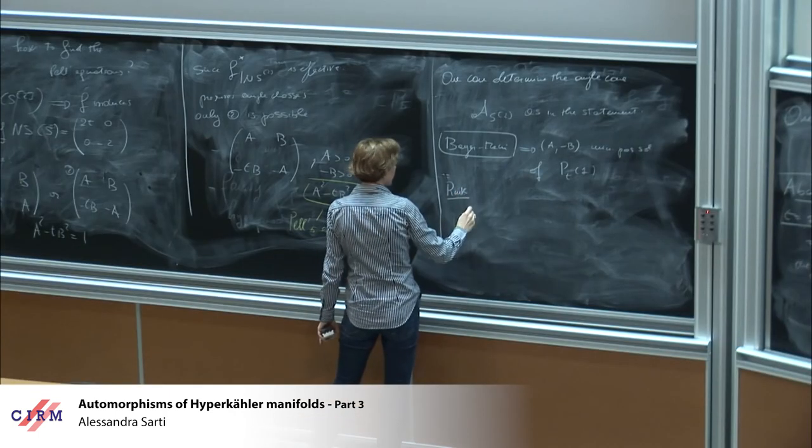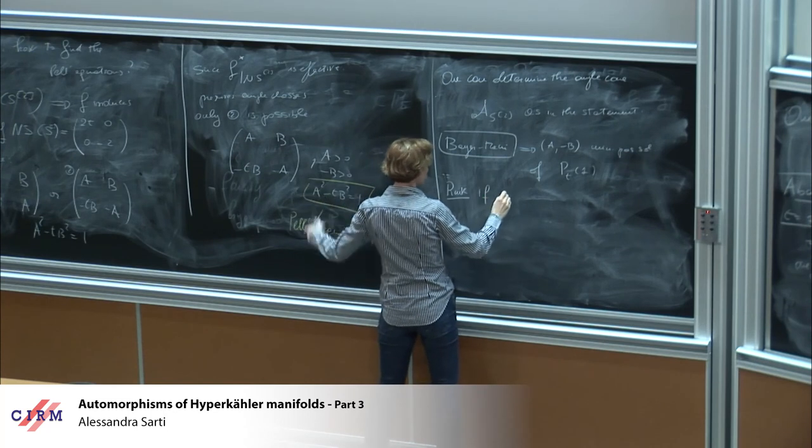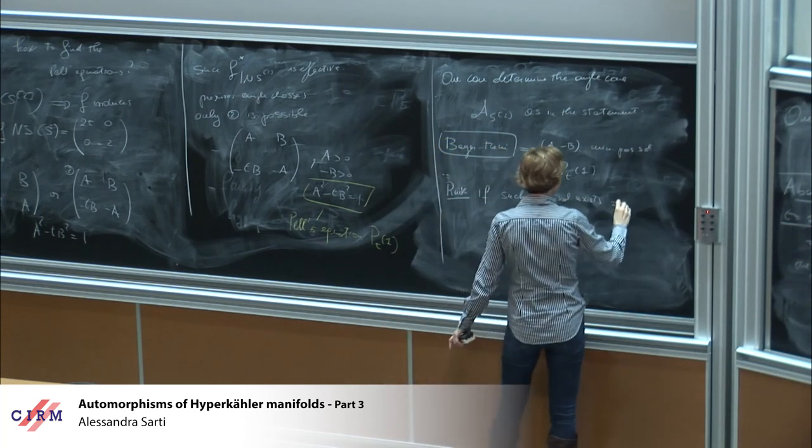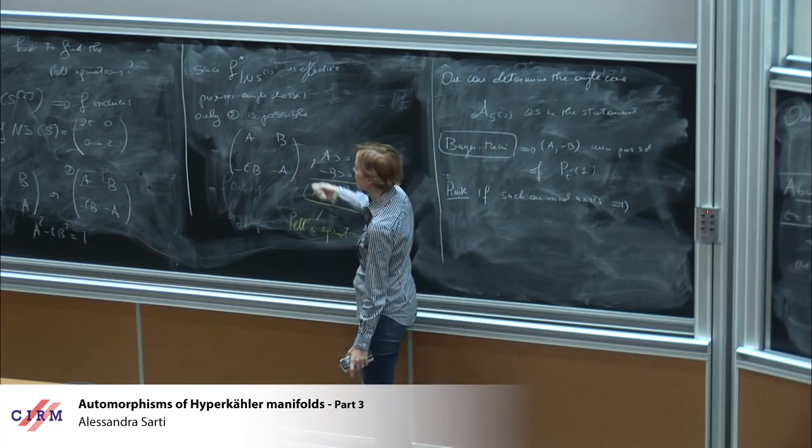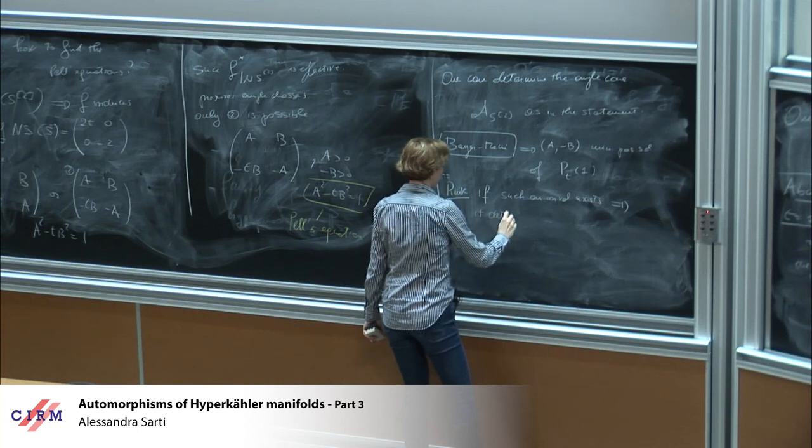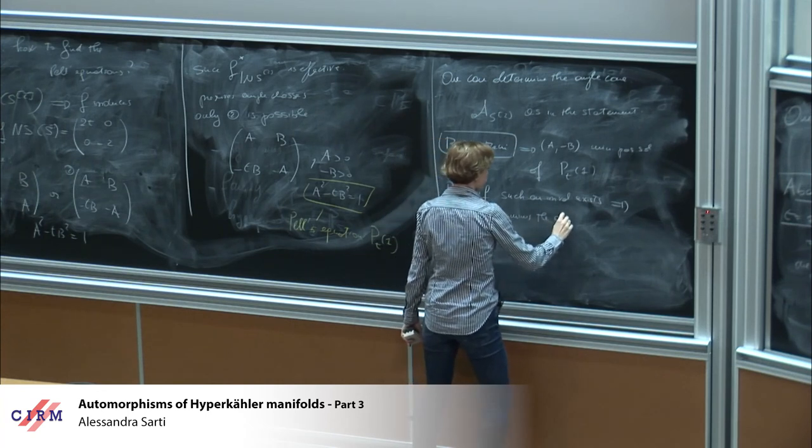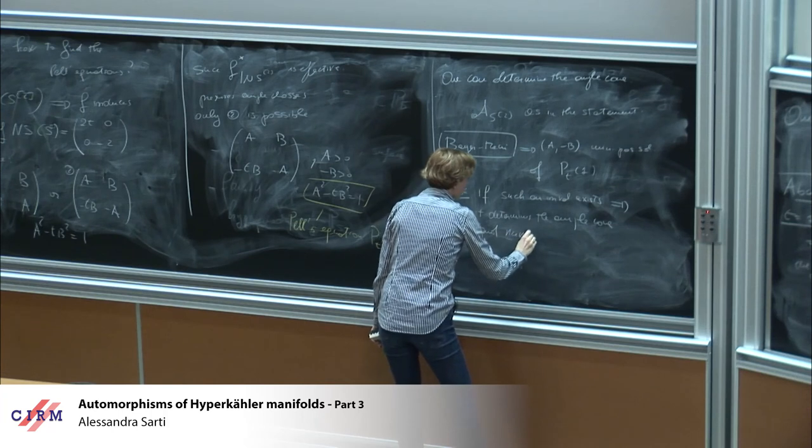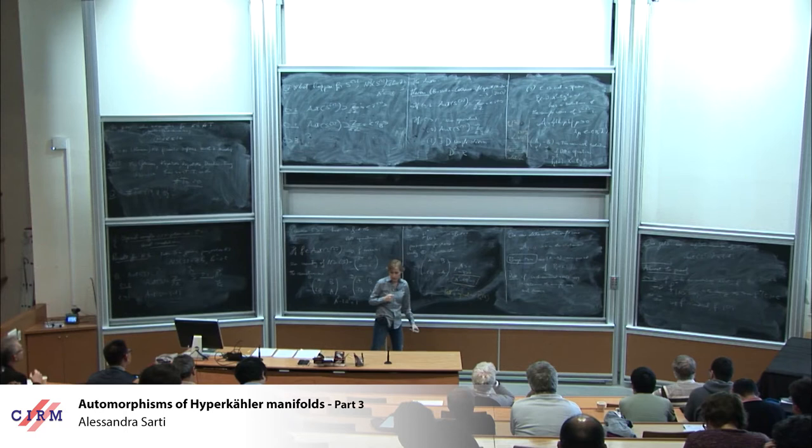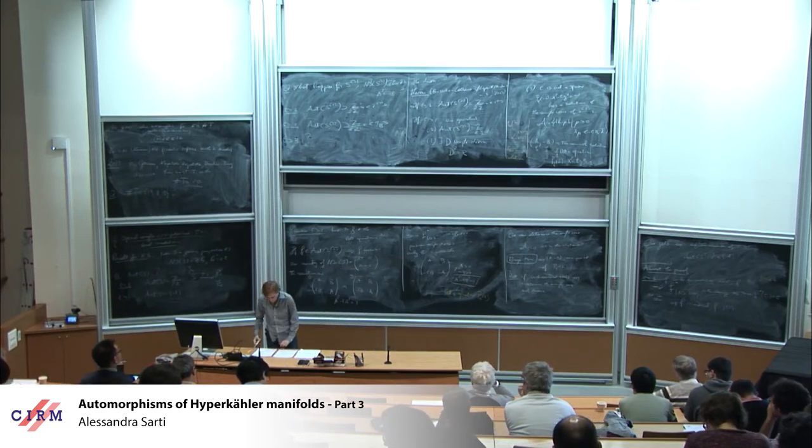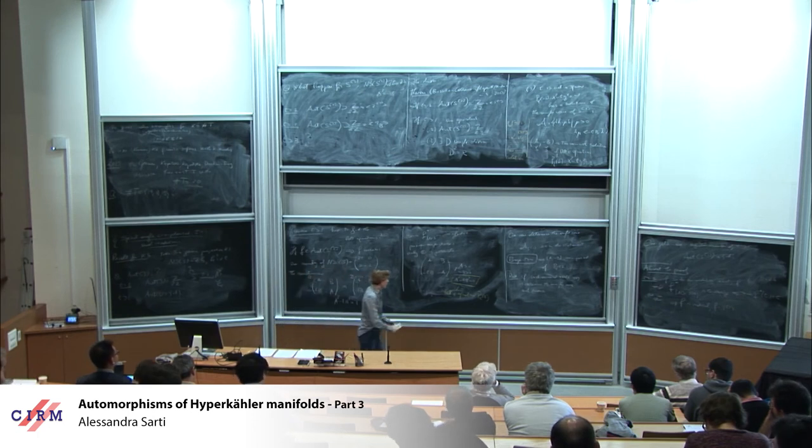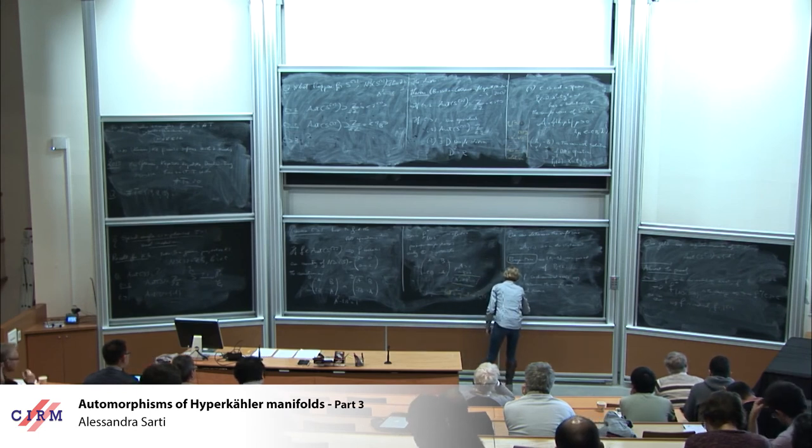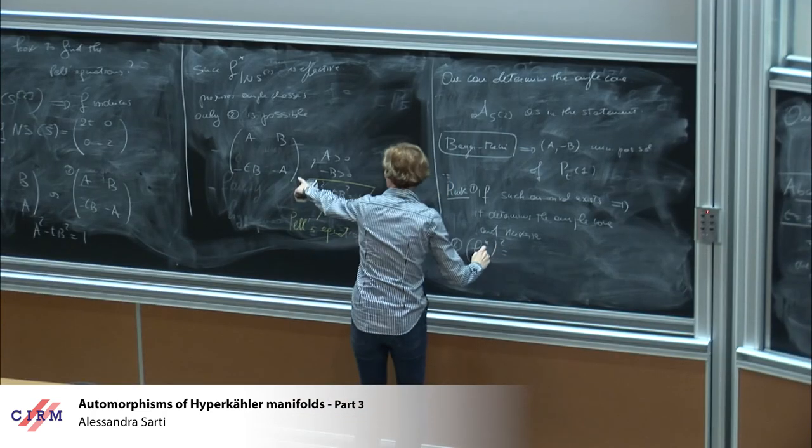And S2 that I write by using the bilinear form which is 2t, 0, 0, minus 2. And one can compute that the isometries are of the form a, b, tb, a or ab minus tb minus a, and a square minus tb square is equal to 1. So you see it's already coming some Pell equation. But we know also that we have such an automorphism, then it must preserve the Kähler cone.